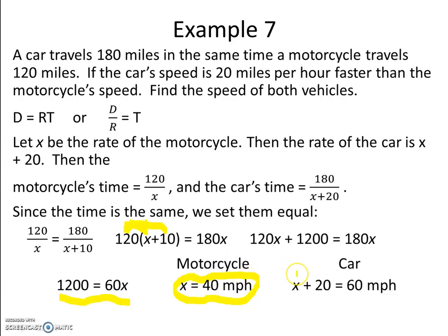But we know the car is going 20 miles per hour faster than the motorcycle. So we add 20 and find that the car is going 60 miles per hour.